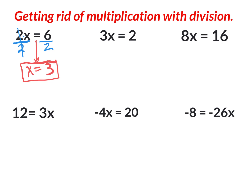I want you to practice identifying where there's multiplication: right here two times x, right there three times x, right here eight times x, right here three times x, right here negative four times x, and right here negative twenty-six times x. So we're going to practice identifying multiplication and getting rid of it with the inverse operation, which is division.